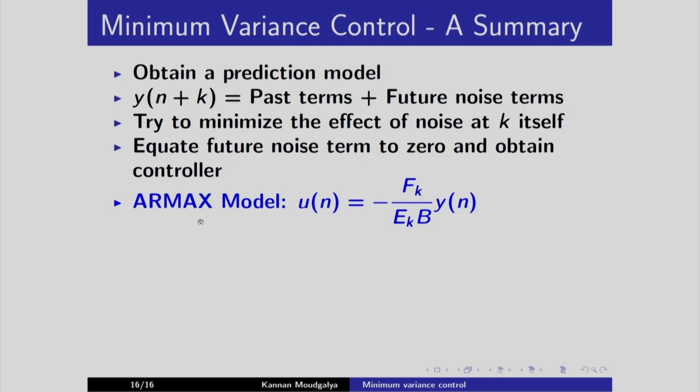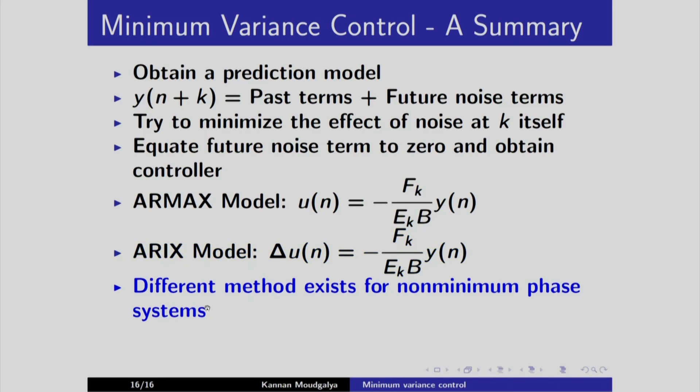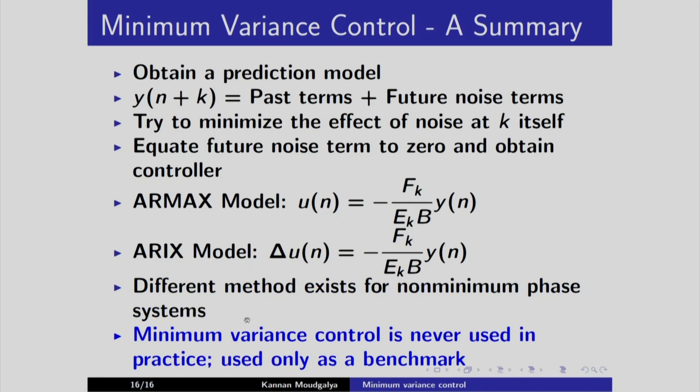For example, we obtain the control law for Hormax model as given here, for Ariks model as given here. Different methods exist for non-minimum phase systems, but we never use minimum variance controllers. In practice, we only use it as a benchmark. These topics are beyond the scope of this course, but explained in great detail in the book.